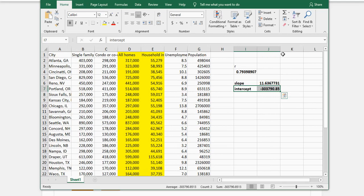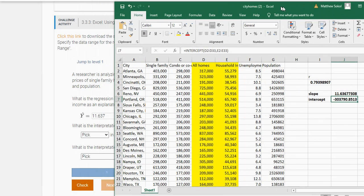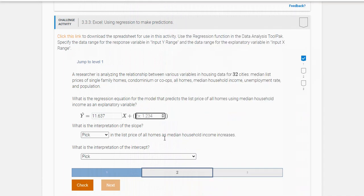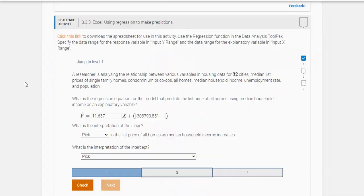So it is negative 303,790.851. You have to be careful to get this in correctly. So it was negative 303,790.851. Bring that back in. So we got that.